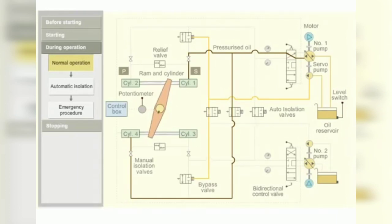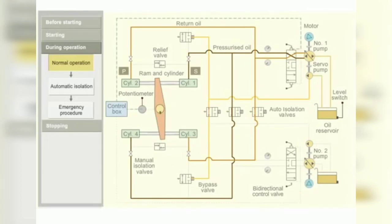The return oil from ram 3 and 2 flows back to the return side of the pump. When the rudder reaches the starboard position, the potentiometer sends a signal to the control box. The control box sends a signal to the bidirectional control valve. The valve is pushed back to its initial position. This blocks the oil flow and stops the movement of the ram.